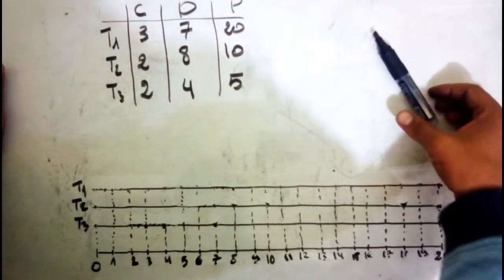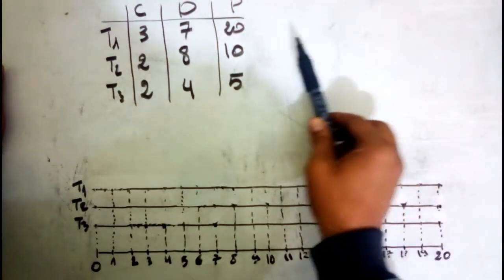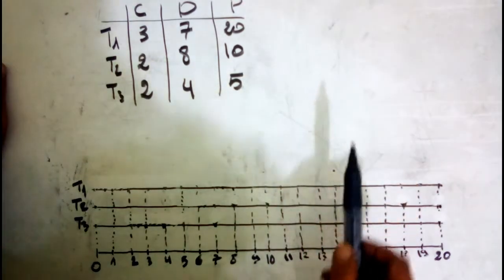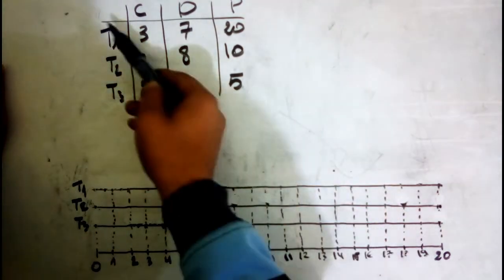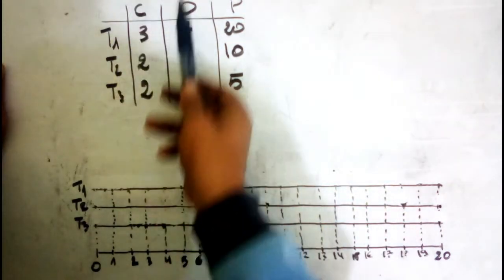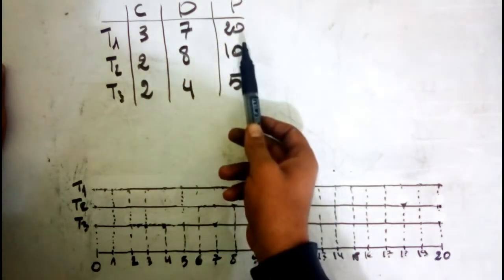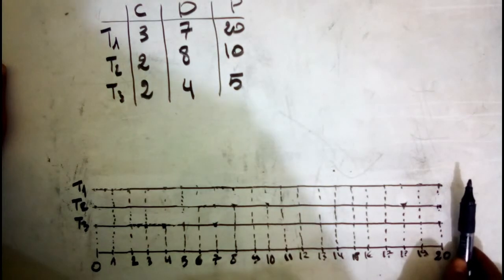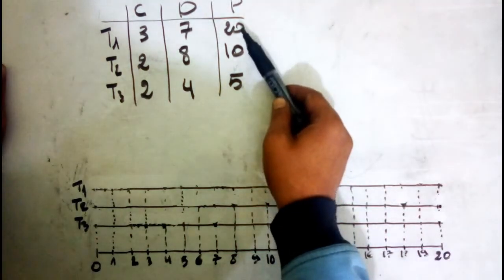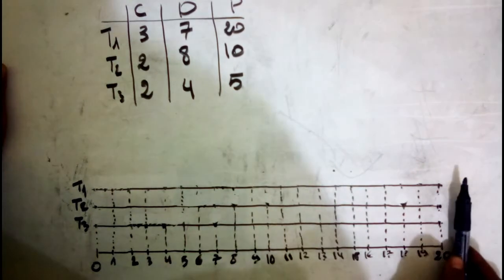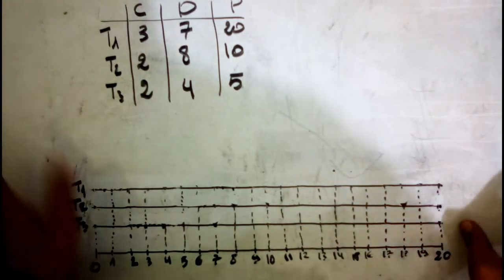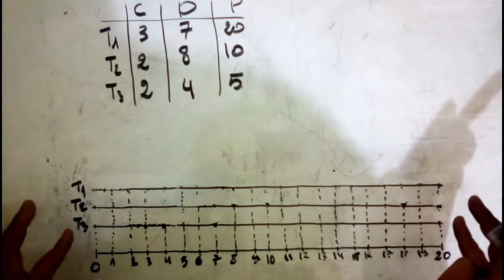Hello, this is Najib from Algeria. In this video I want to explain the Earliest Deadline First scheduling algorithm. Here I have three processes: T1, T2, and T3, with their capacity, deadline, and period. We can schedule this system in just 20 units of time because the LCM of 20, 10, and 5 is equal to 20. That means if I continue scheduling, I just get the same thing repeated.